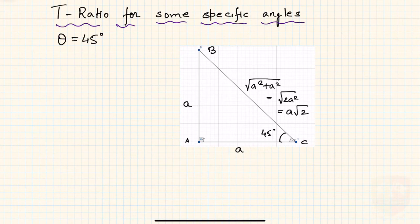Hello friends, welcome to another session on trigonometry. In this session we are going to deal with T-ratios for some specific angles. We have already seen the various values of T-ratios for theta equals 0 and theta equals 90 in previous sessions.